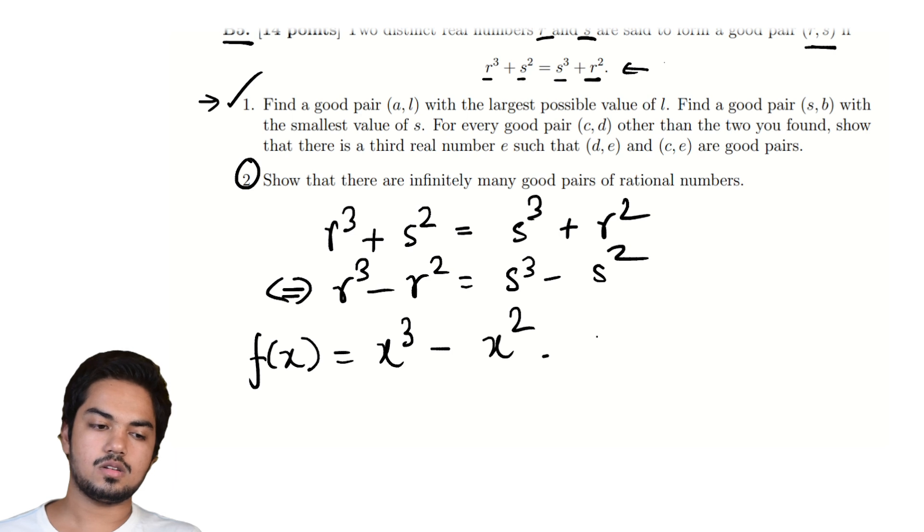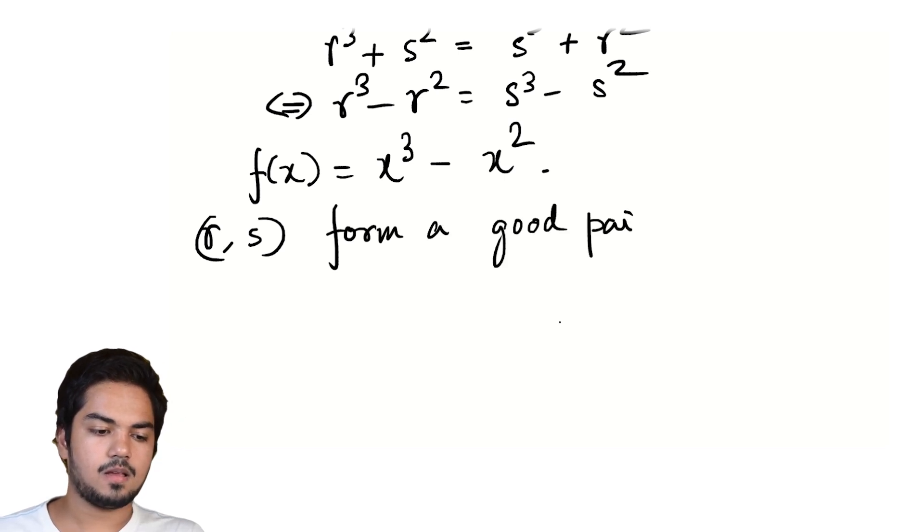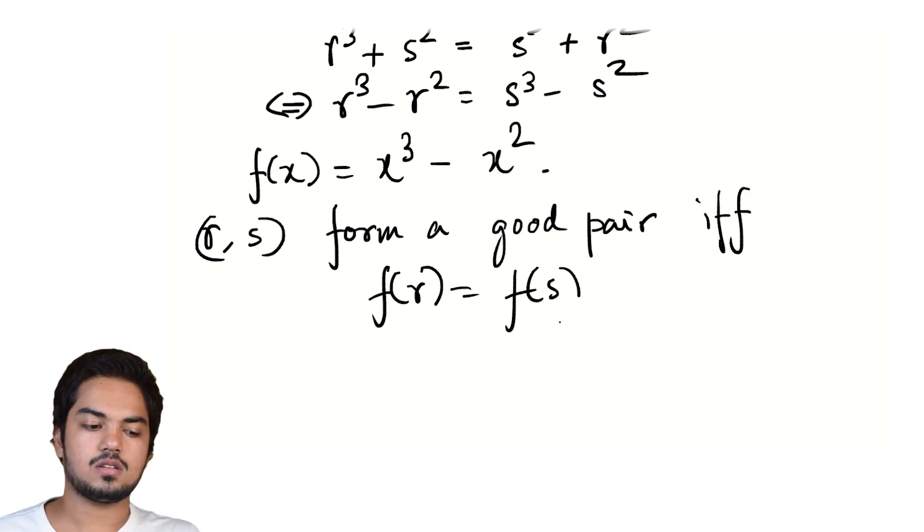And so now we have a reinterpretation. r and s form a good pair if and only if f(r) = f(s). That's it.